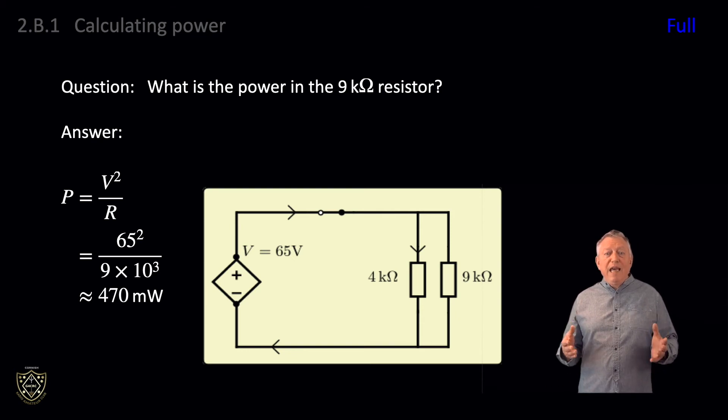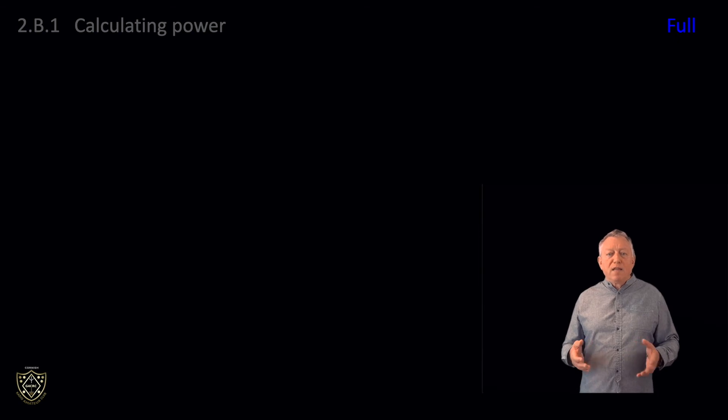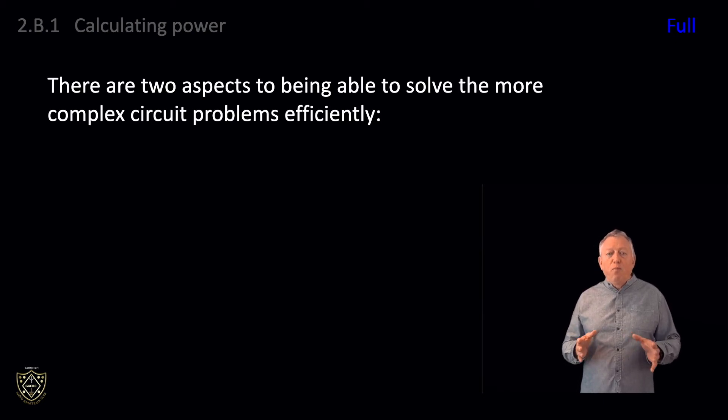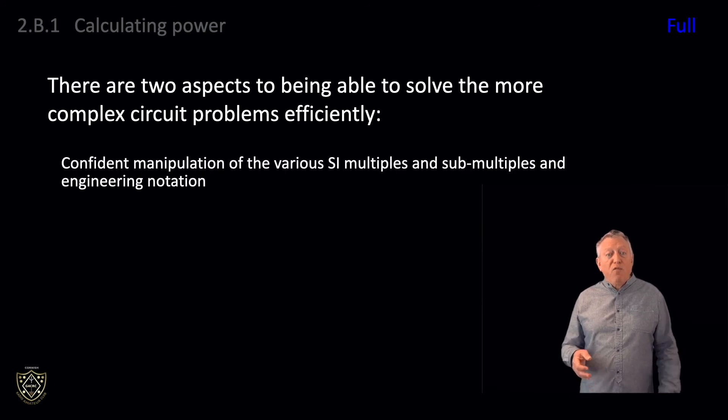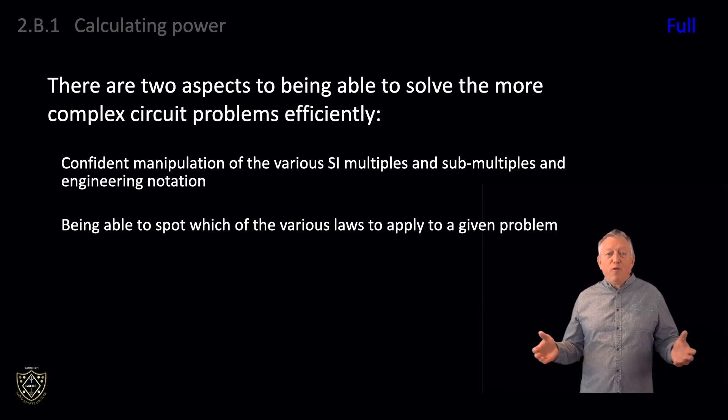In some texts, E is used to represent a voltage rather than V, so you might see P equals E squared divided by R or E equals I times R. The RSGB syllabus and literature always use V, so we will stick to V. At full license level, you will need to know the forms of Ohm's law formula and the power formula, as well as Kirchhoff's current law and Kirchhoff's voltage law, to solve circuit problems. There are two aspects to being able to solve the more complex circuit problems efficiently: confident manipulation of the various SI multiples and submultiples in engineering notation, and being able to spot which of the various laws to apply to a given problem. This only comes with practice.